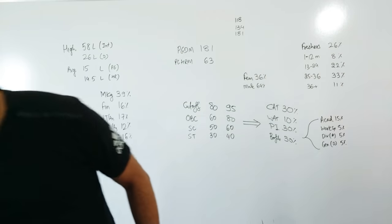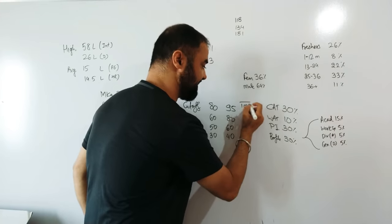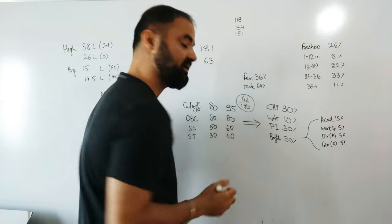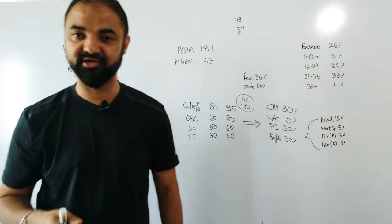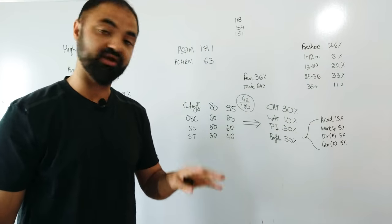95 percentile, from a marks point of view out of 100 marks CAT paper, is approximately 42 marks. Get 42 marks out of 100.